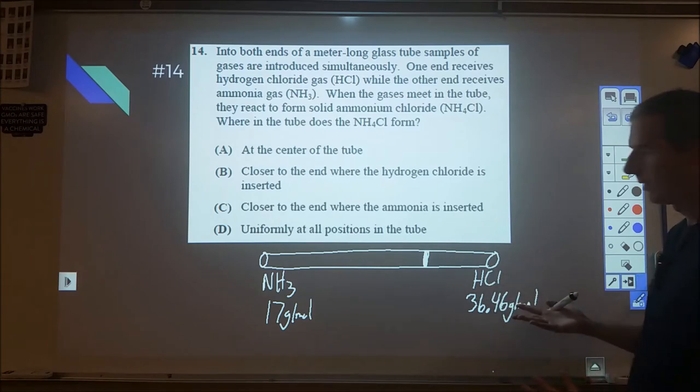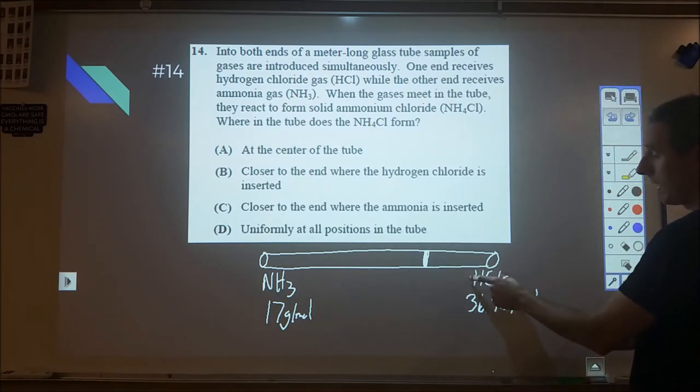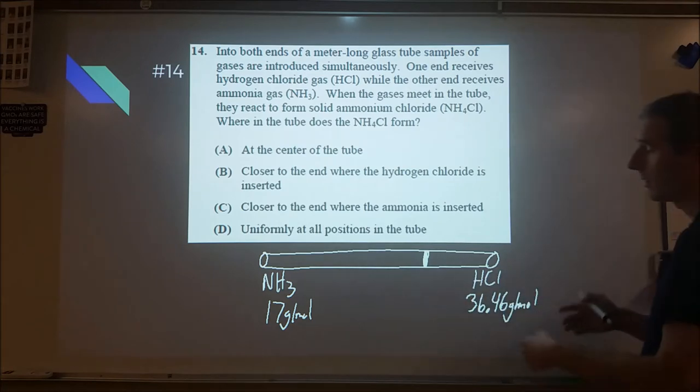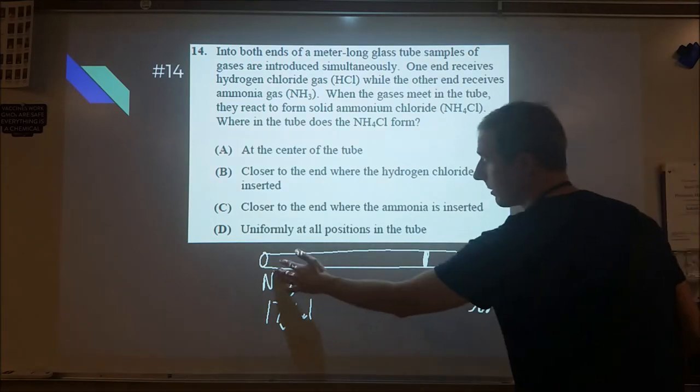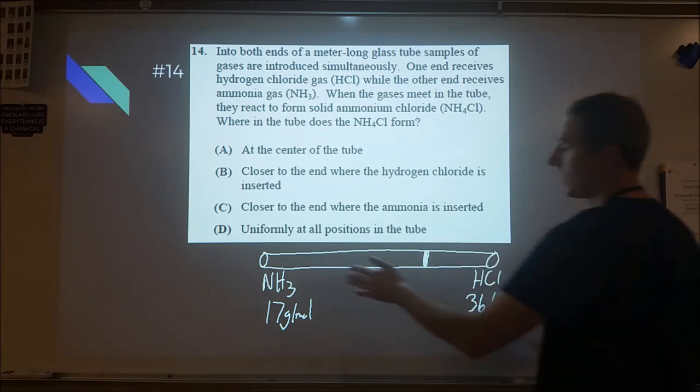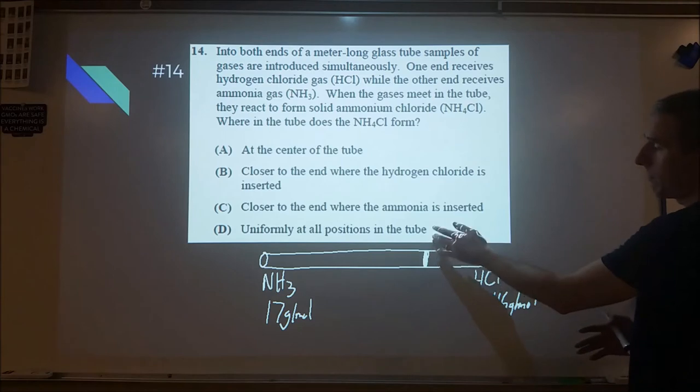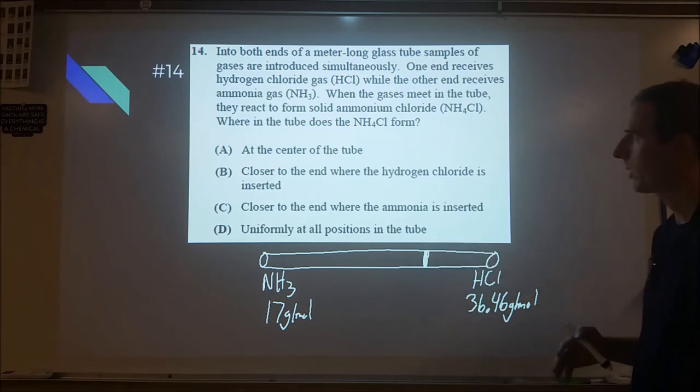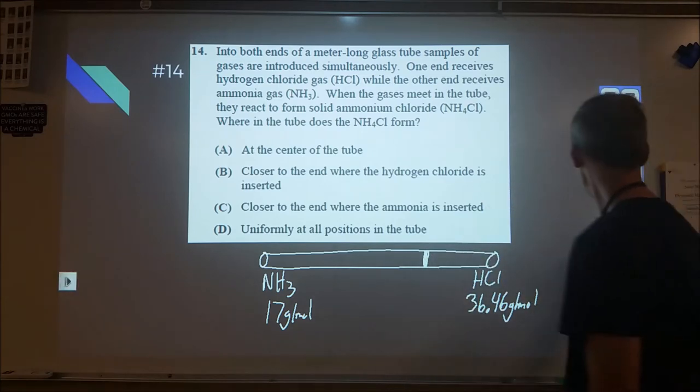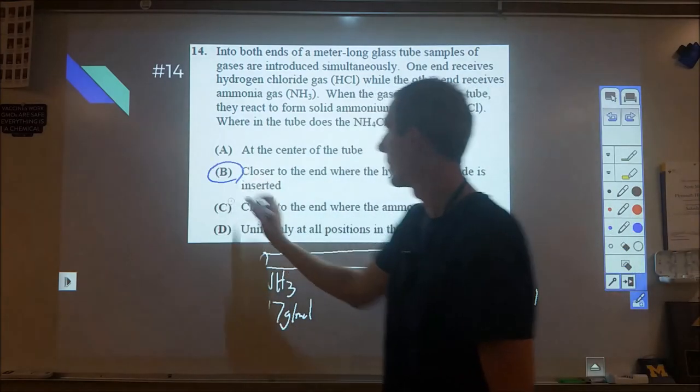So we have this distribution where these are generally speaking moving faster, these are moving slower. They're going to meet and form ammonium chloride somewhere closer to the hydrochloric acid. Because of how temperature is defined, at the same temperature these are moving slower than these ones. So we expect the band to form over here, closer to the end where the hydrogen chloride is inserted. V would be our choice for that.